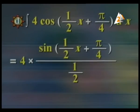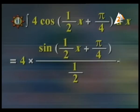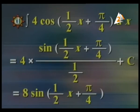Number (d): integration of 4 times cosine(x/2 plus π/4) dx. Remember, π/4 means 180 divided by 4, which equals 45 degrees. Integration of cosine equals sine, divided by the coefficient of x which is 1/2, so the answer is 8 sine(x/2 plus π/4) plus c.